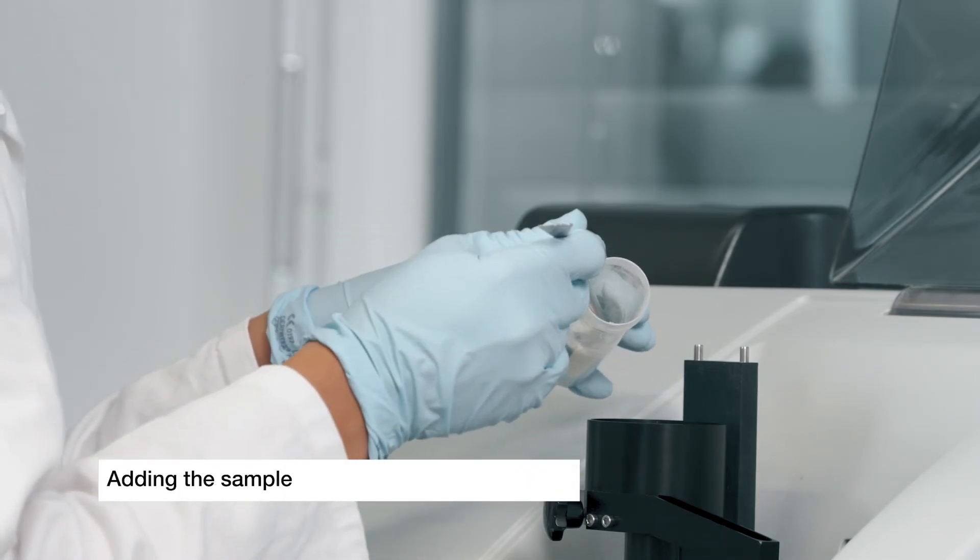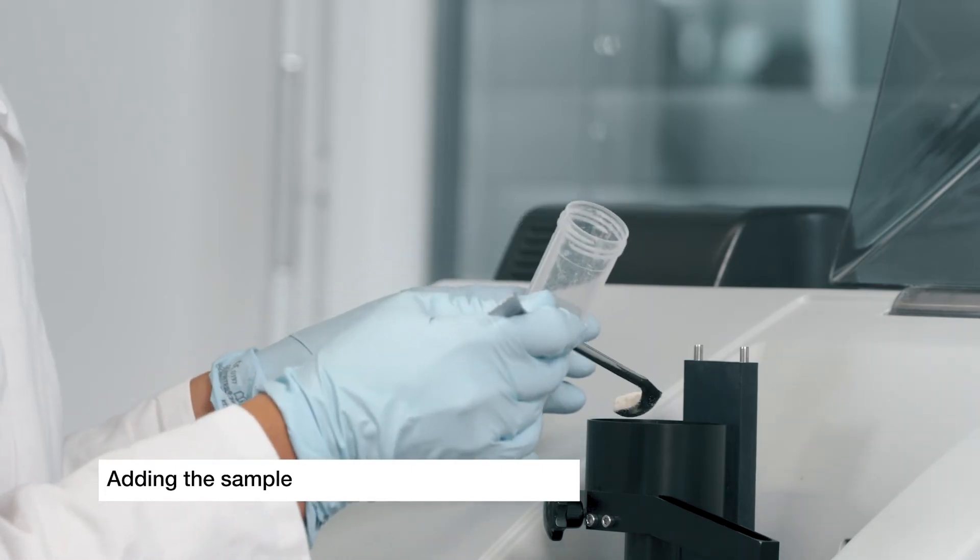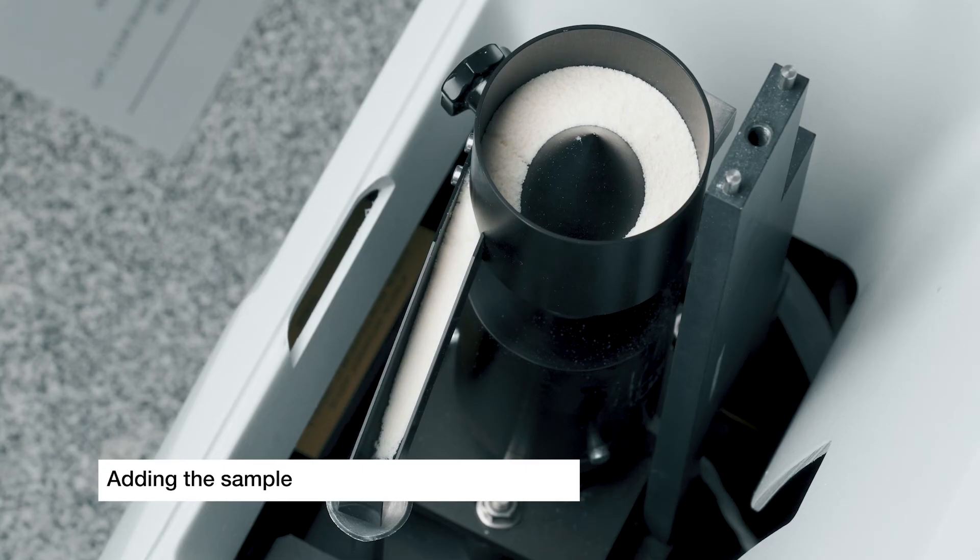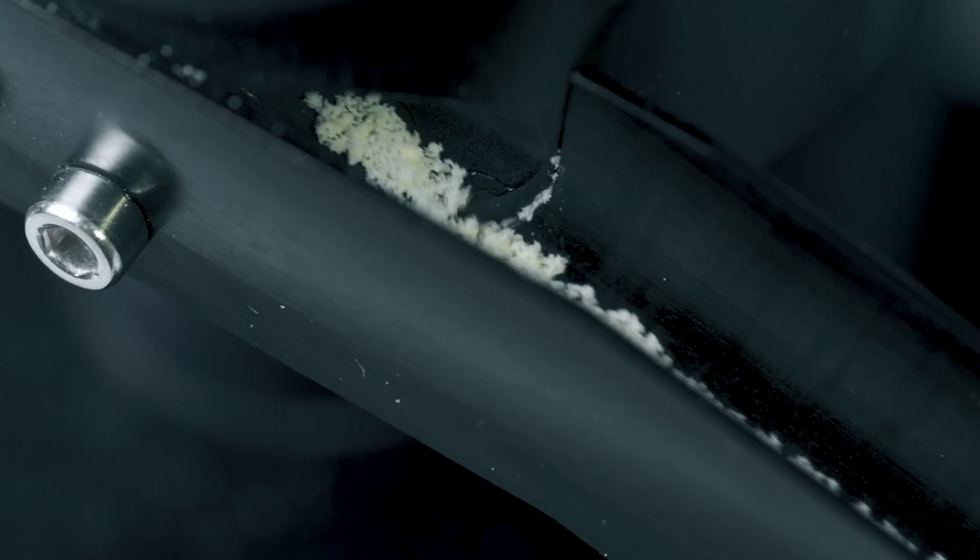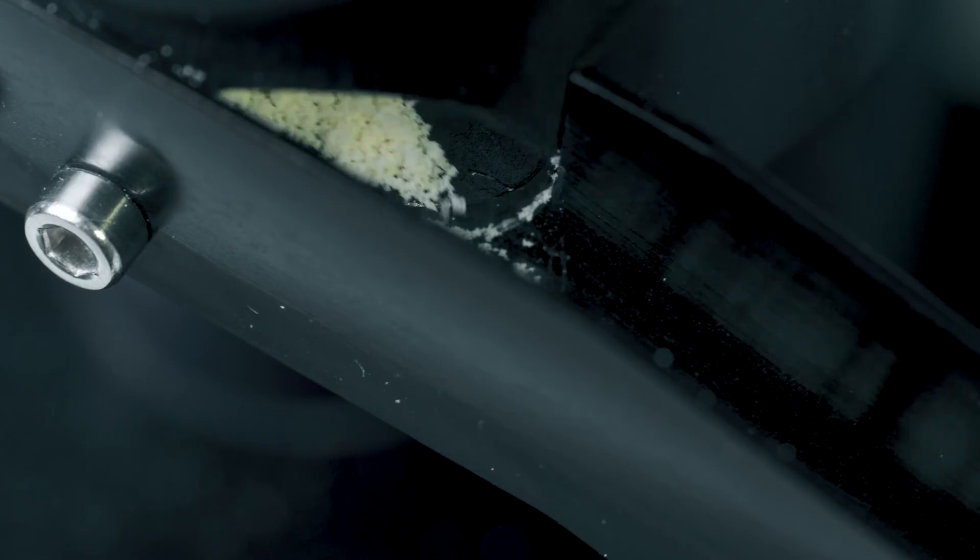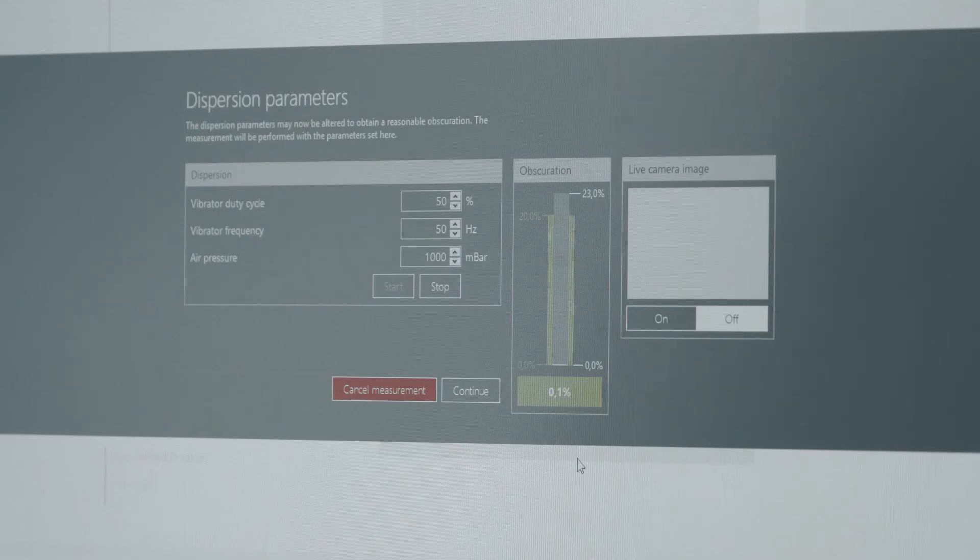After the background has been recorded, the sample is introduced in the sample holder mounted on a vibrational device. The sample flow is adjusted in combination with the air pressure in order to achieve the desired obscuration, which is clearly indicated by the software.